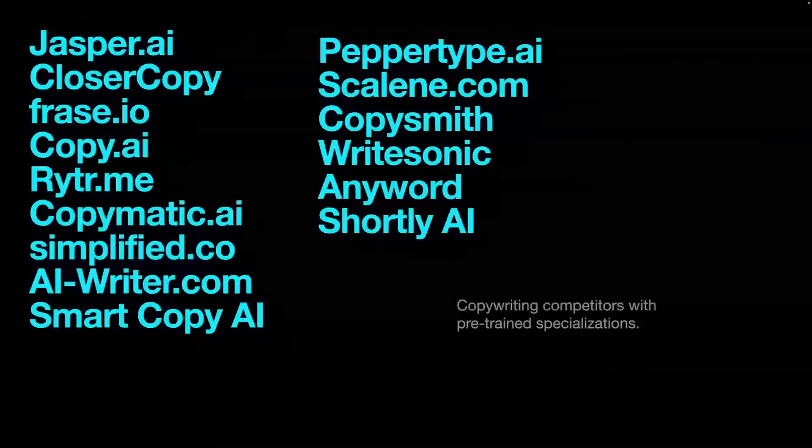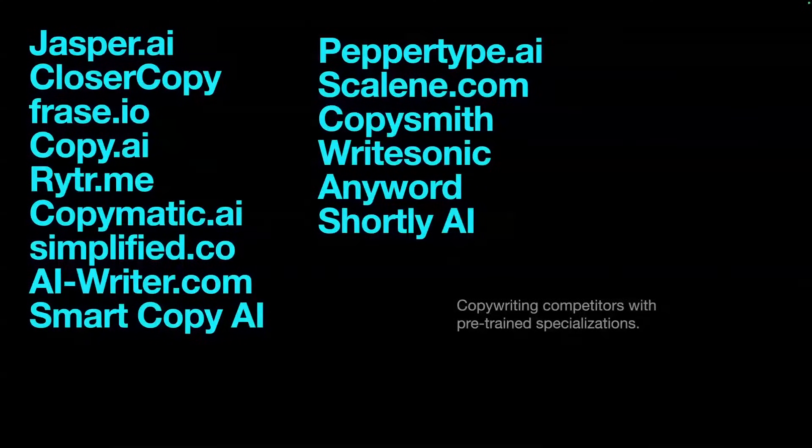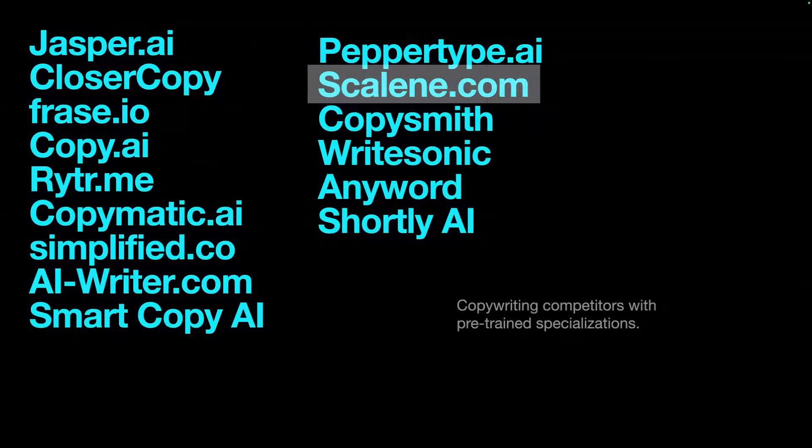There are some other AI platforms for writing copy you may have heard of: Jasper AI was one of the first. But there are also Closer Copy, Phrase.io, Copy.ai, Writer.me, Copymatic, Simplified AI Writer, Smart Copy AI, Pepper Type AI, Scalenut, CopySmith, WriteSonic, Anyword, Shortly AI. These are copywriting competitors with pre-trained specializations. What I found is I can do the same thing, sometimes even better, with ChatGPT — if I tell it to write like a sample I provide, it can reproduce it without needing these other platforms.